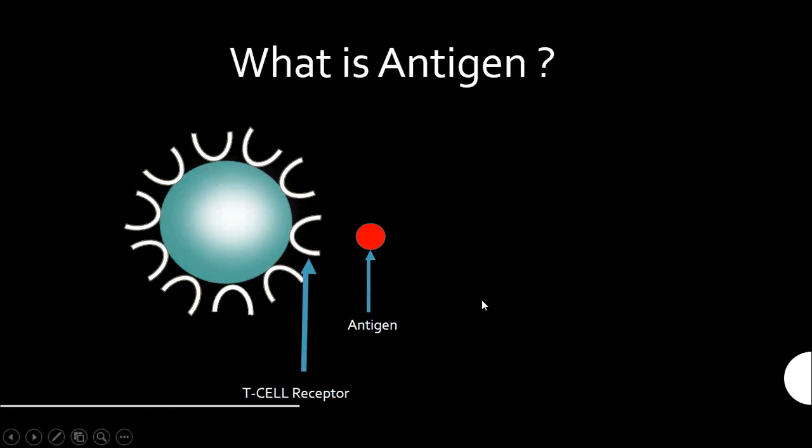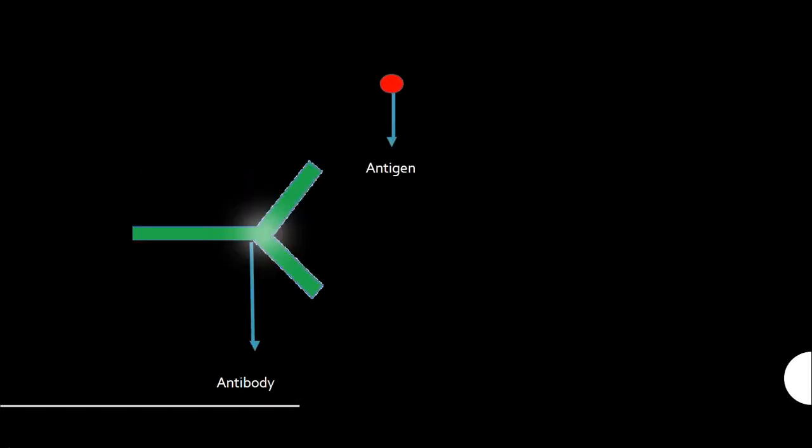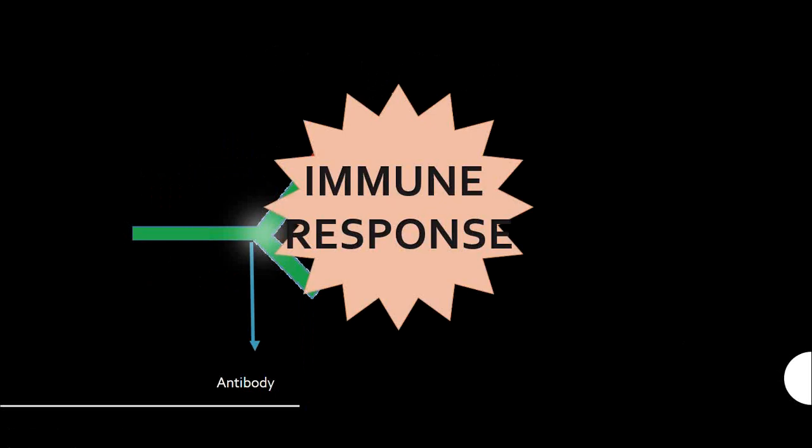An antigen is any agent capable of binding to a T cell receptor or an antibody molecule. Any antigen that is capable of binding to an antibody molecule and showing an immune response is known as an immunogen.